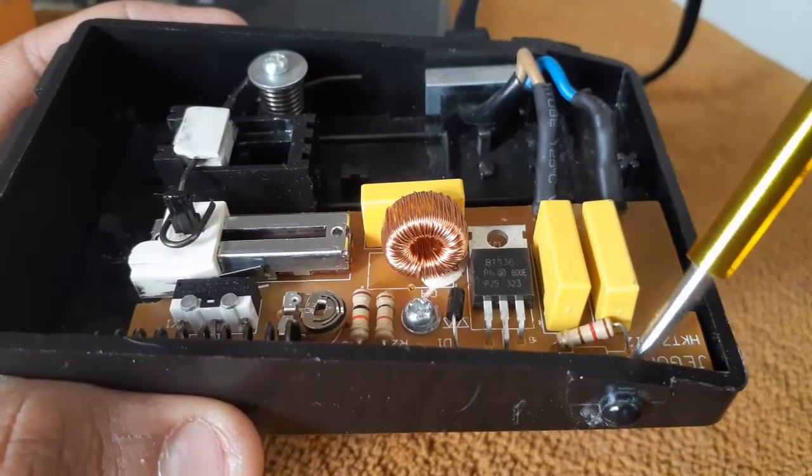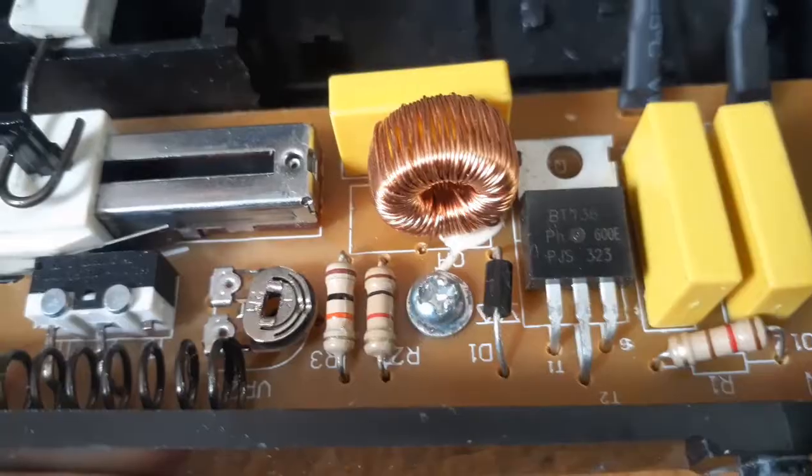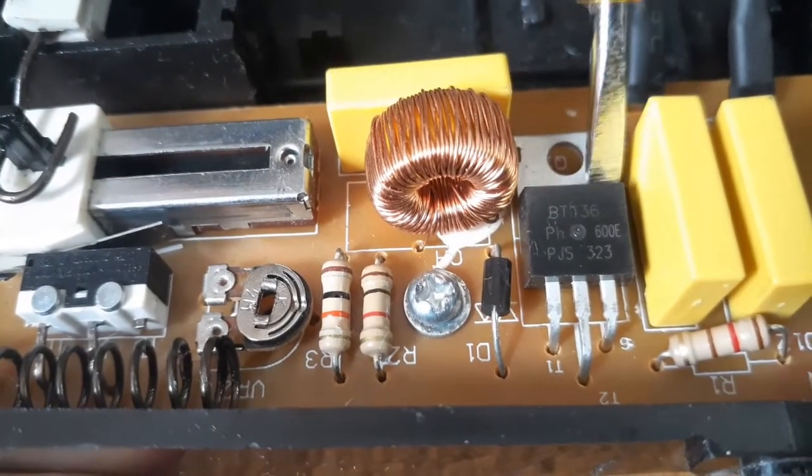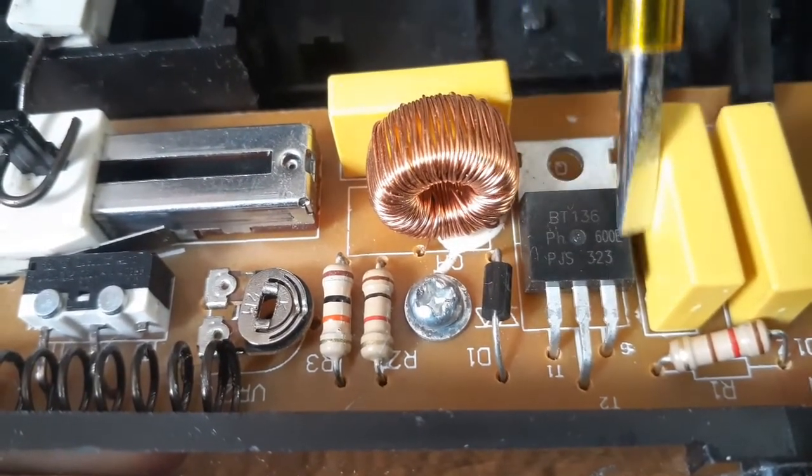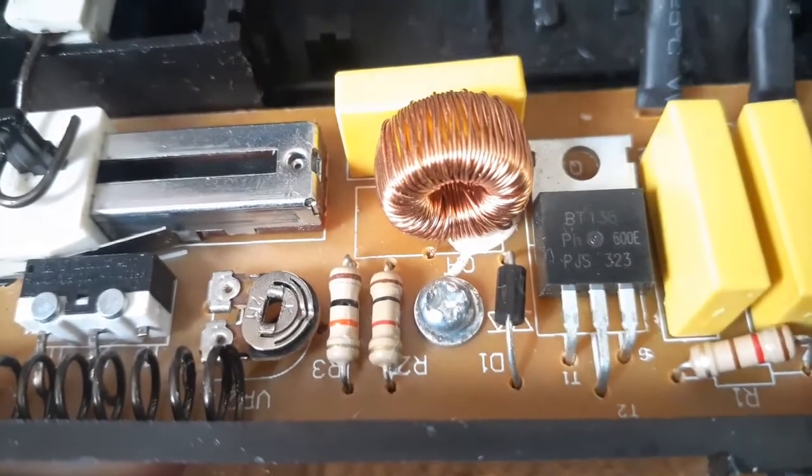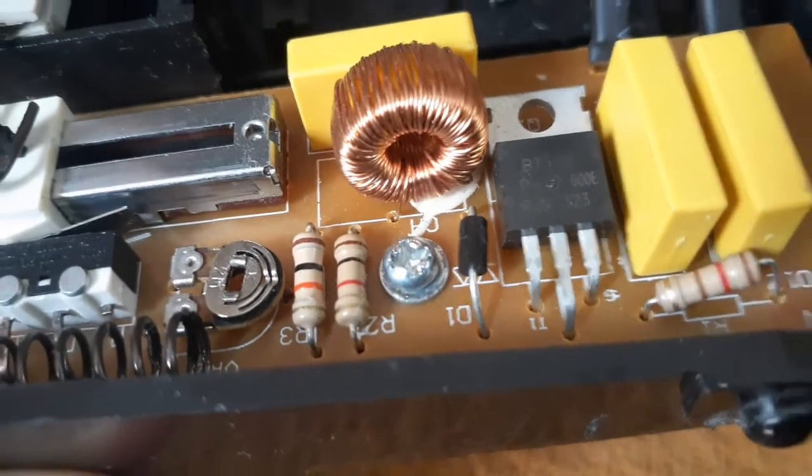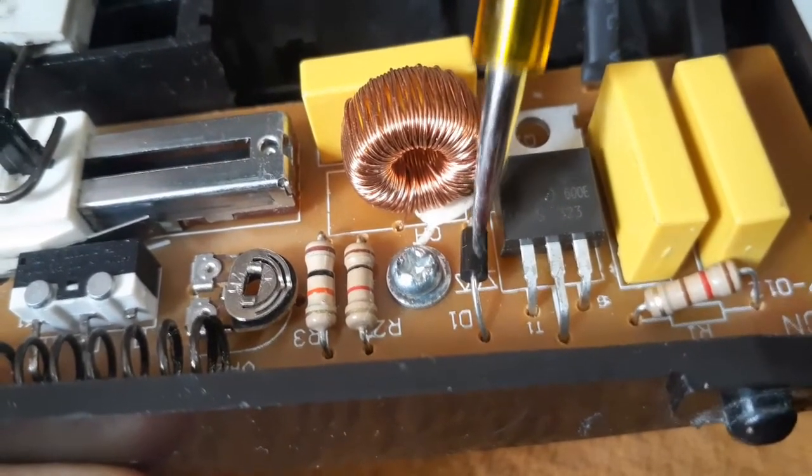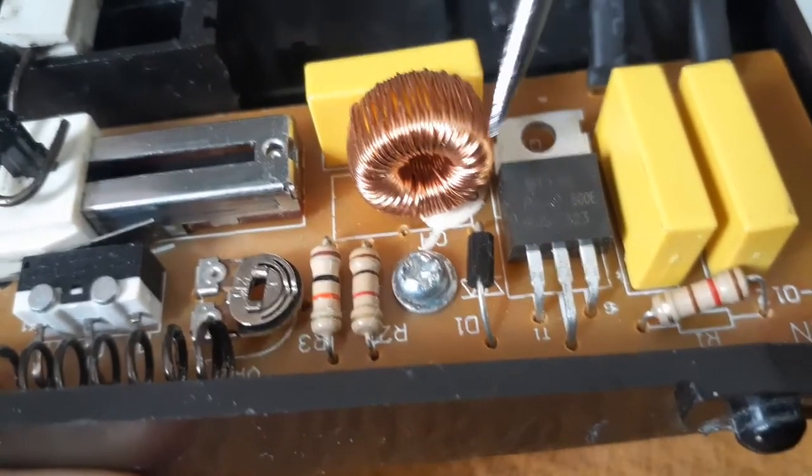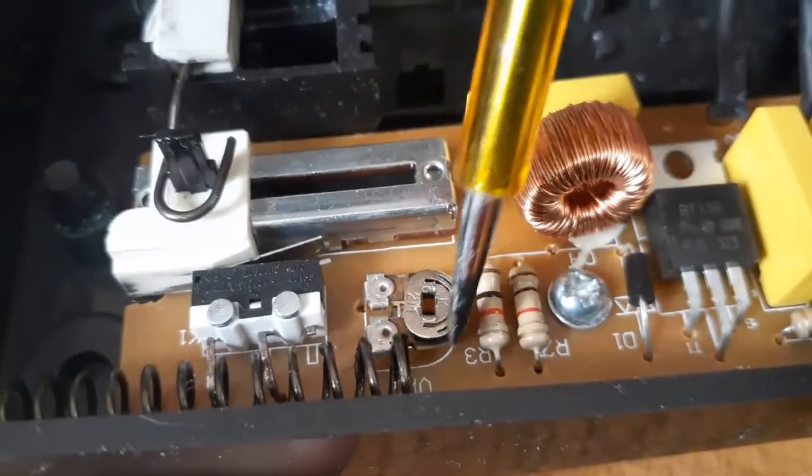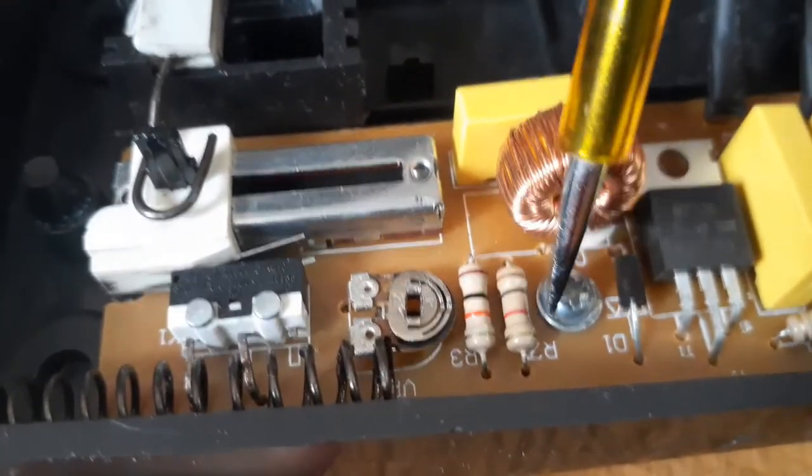A BT136 triac which is used for phase angle control, which I will explain when we look at the schematic. A DB3 diac for basically triggering the triac, a simple toroid inductor for basically maintaining constant current, and capacitors and more resistors which we will look at further.